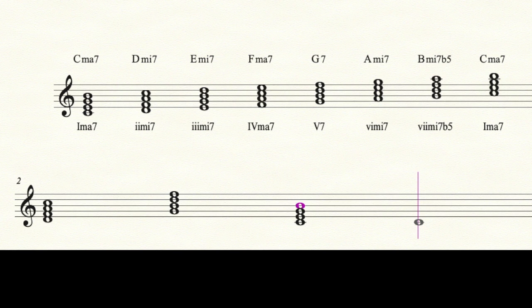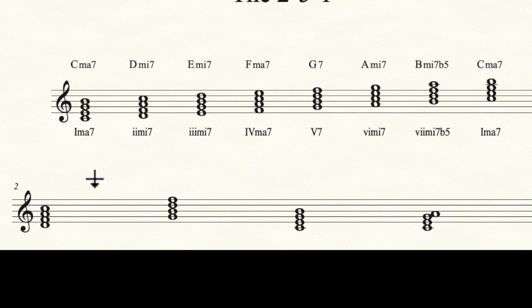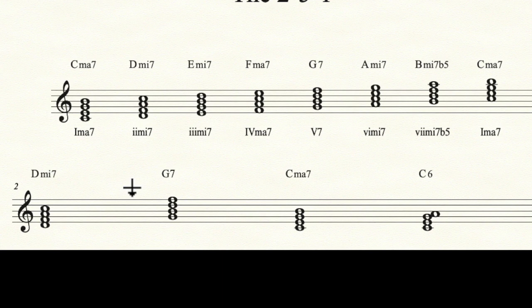So whenever I teach somebody the 2-5-1, I always have them learn D minor 7 to G7 to C major 7 to C6. That's a great way to practice this — you get more value, and you have two options for the 1 chord. And that's all you need to know about the 2-5-1.